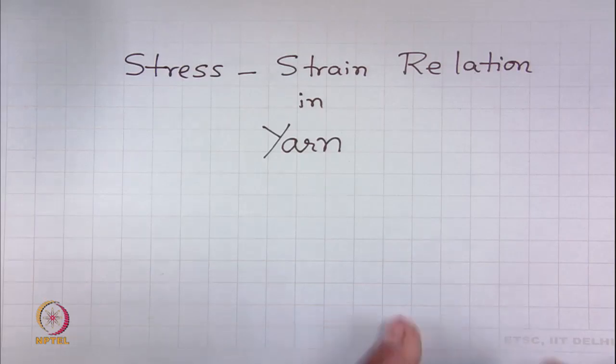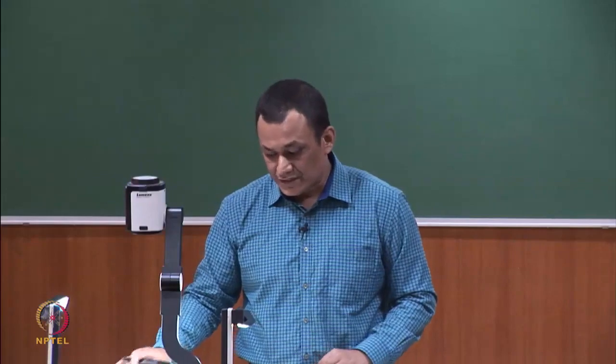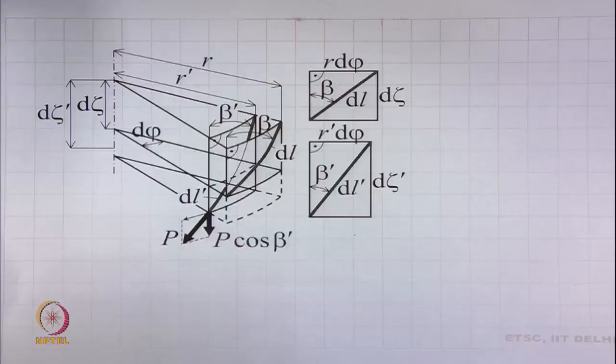In the first class of this module we mentioned that we would discuss two things: one is the tensile mechanics of parallel fiber bundle, and second is the stress-strain relation in yarn. So far we have discussed the tensile mechanics of parallel fiber bundles. Now we are going to discuss stress-strain relation in yarn, and we will start this part with a diagram.